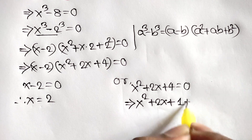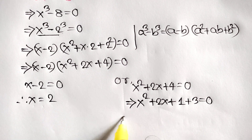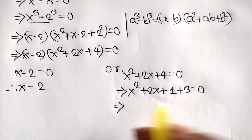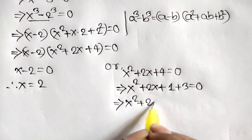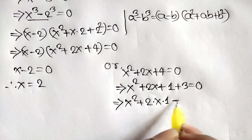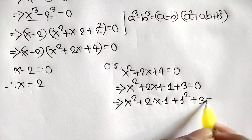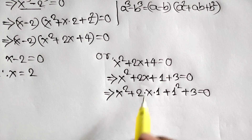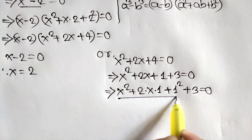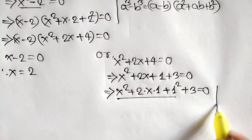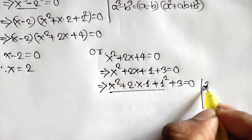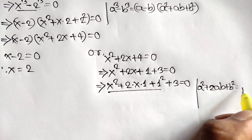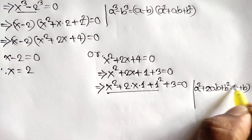Now x square plus 2x plus 4 can be written as x square plus 2 times x times 1 plus 3 is equal to 0. This is like the formula a square plus 2ab plus b square is equal to a plus b whole square.